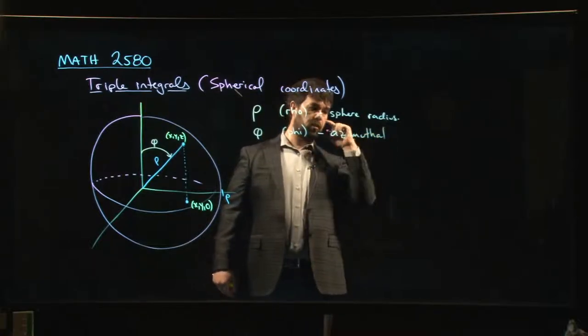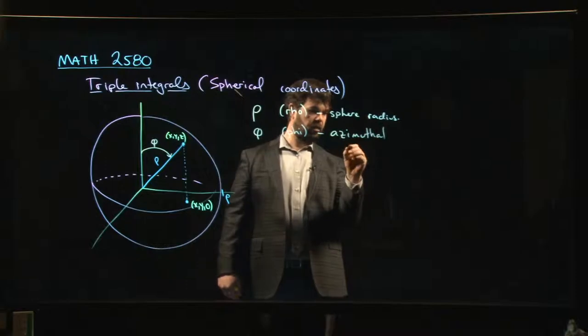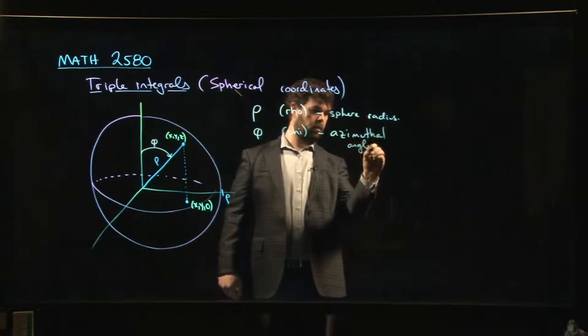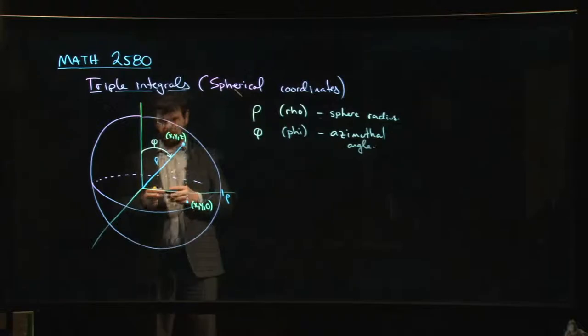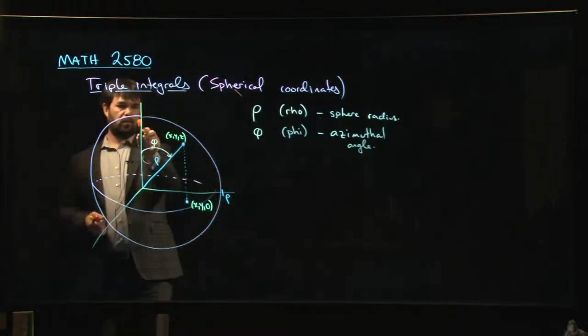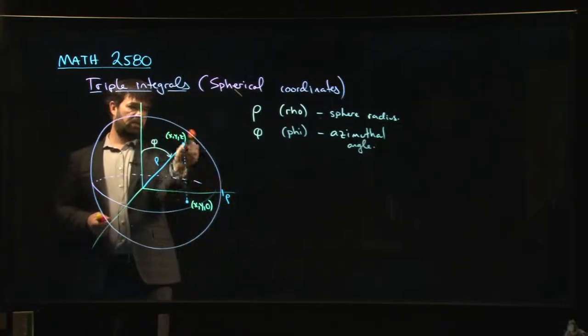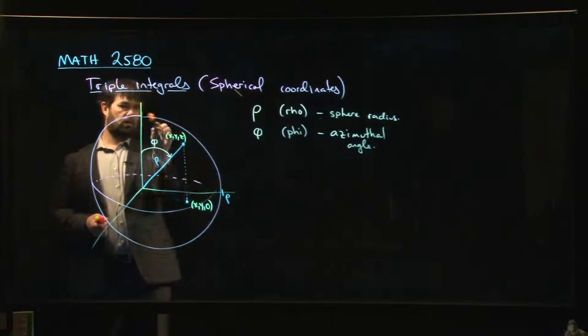Don't worry, there won't be a vocabulary quiz. So phi gives the latitude, essentially. It tells you kind of where this way you should be on the sphere.